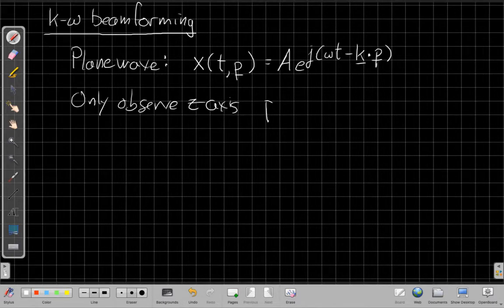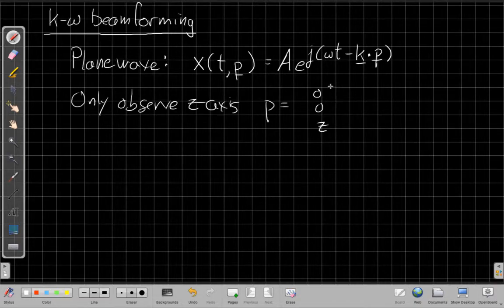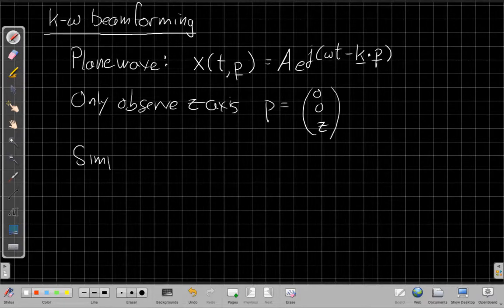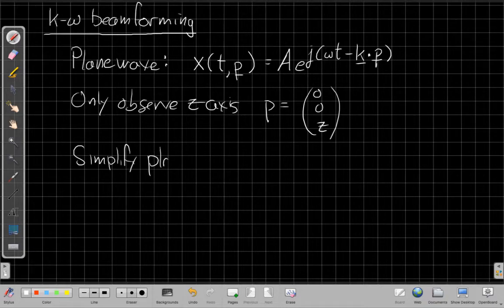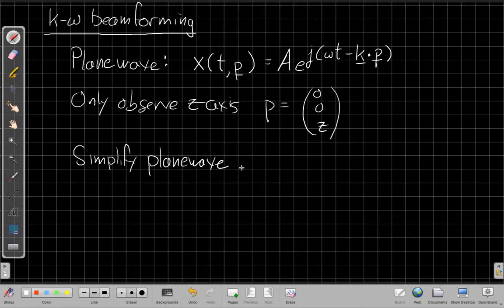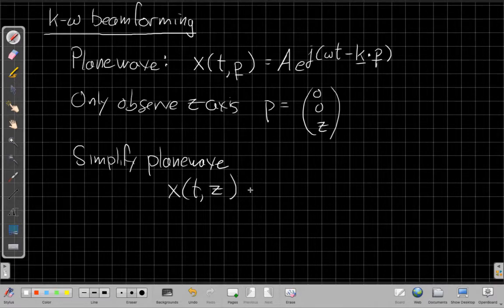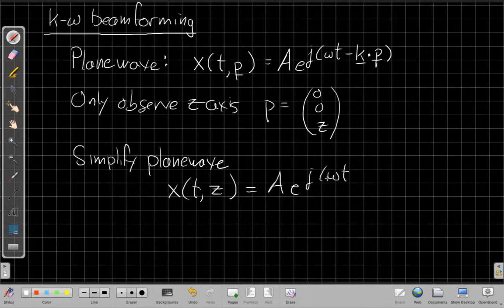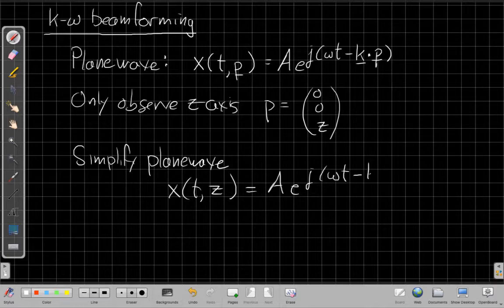All right, so our sensors all have the form where p is going to be zero on the first two axes and then some point in z, right? That this inner product simplifies. We can simplify the plane wave. And say this dot product just pulls out the z component of the wave number. So we'd say that x still is a time signal, but again, only observed on the z-axis. It still has some amplitude. And then I have the radian frequency omega times t. And then this dot product is simplified to be k sub z, just the z component of the wave vector, times that location in space.